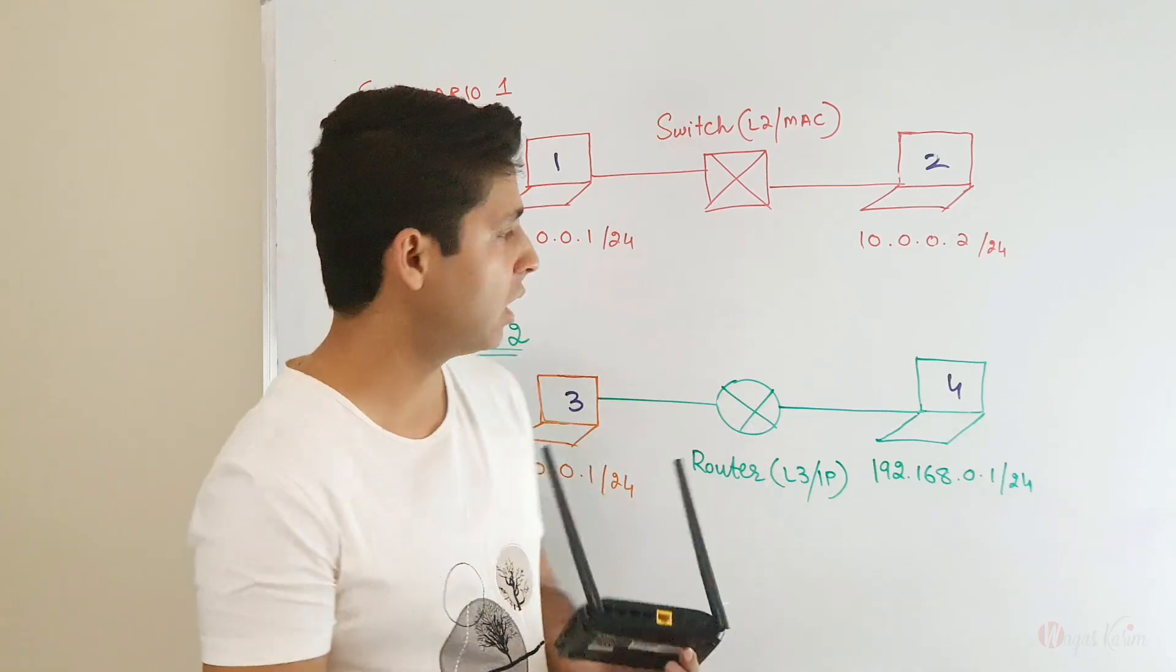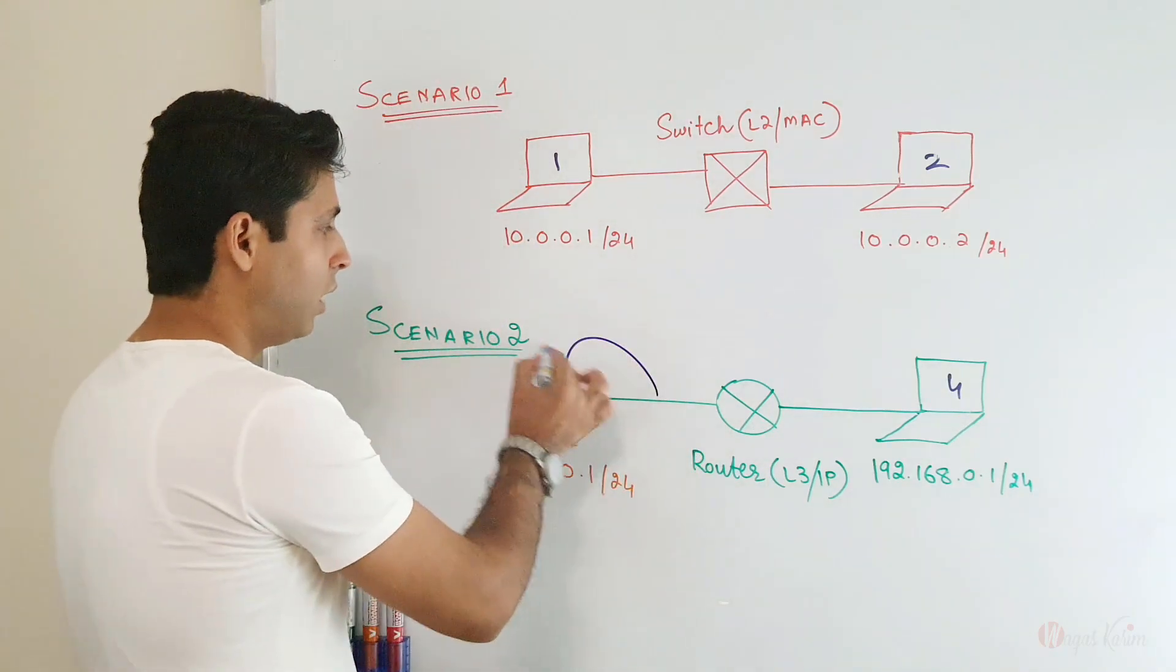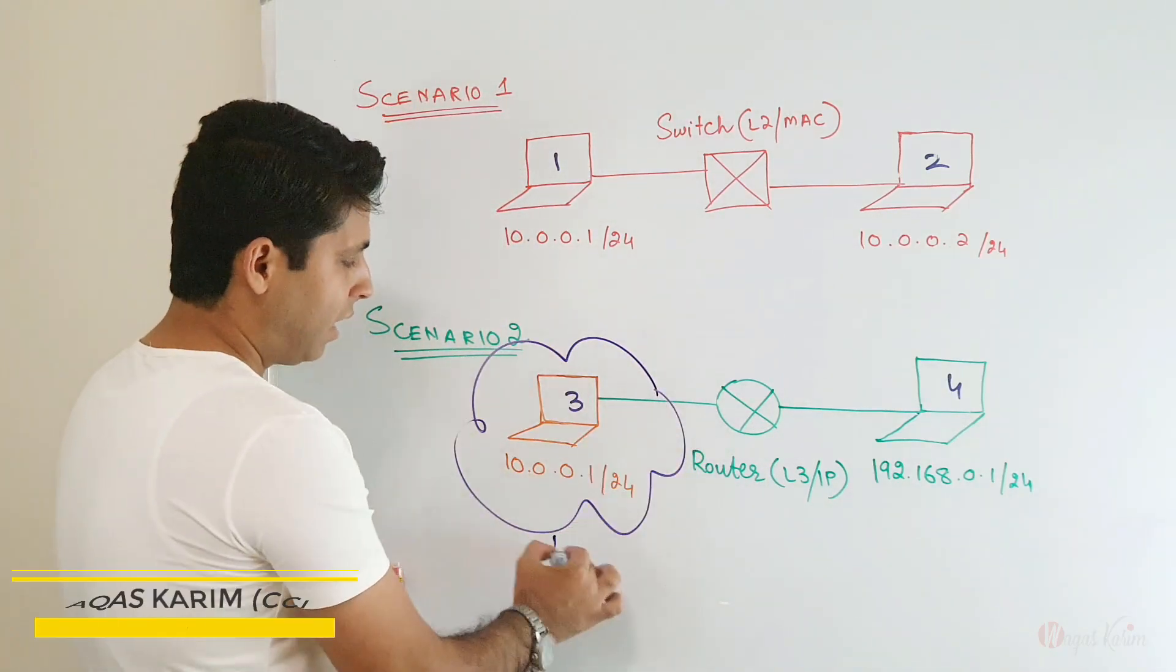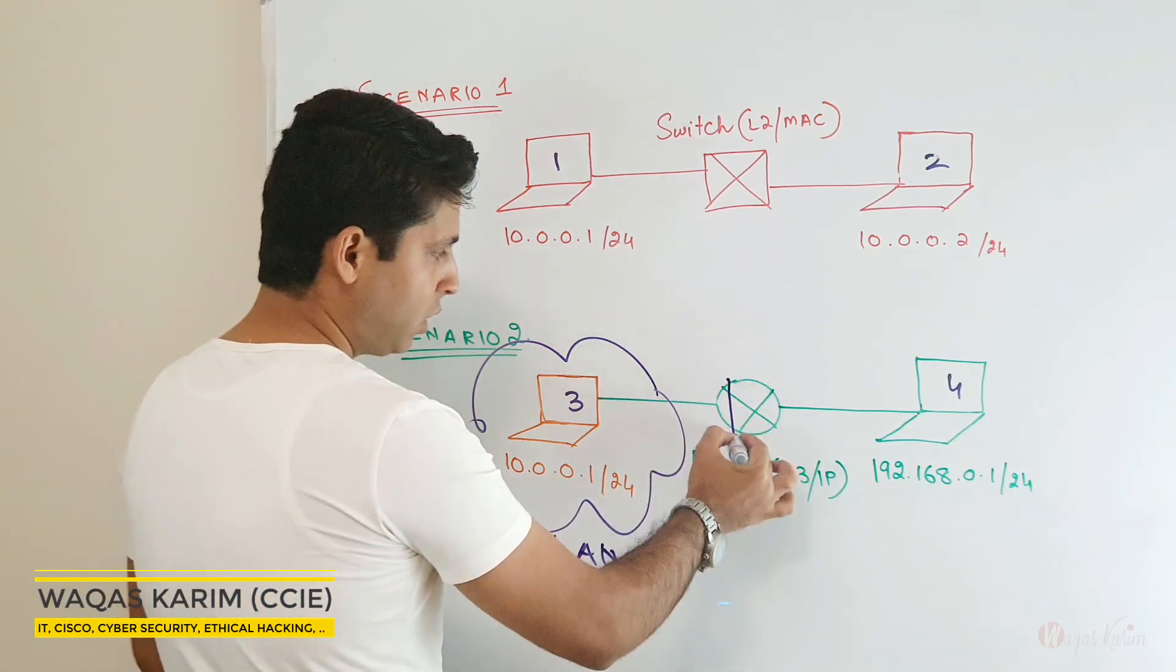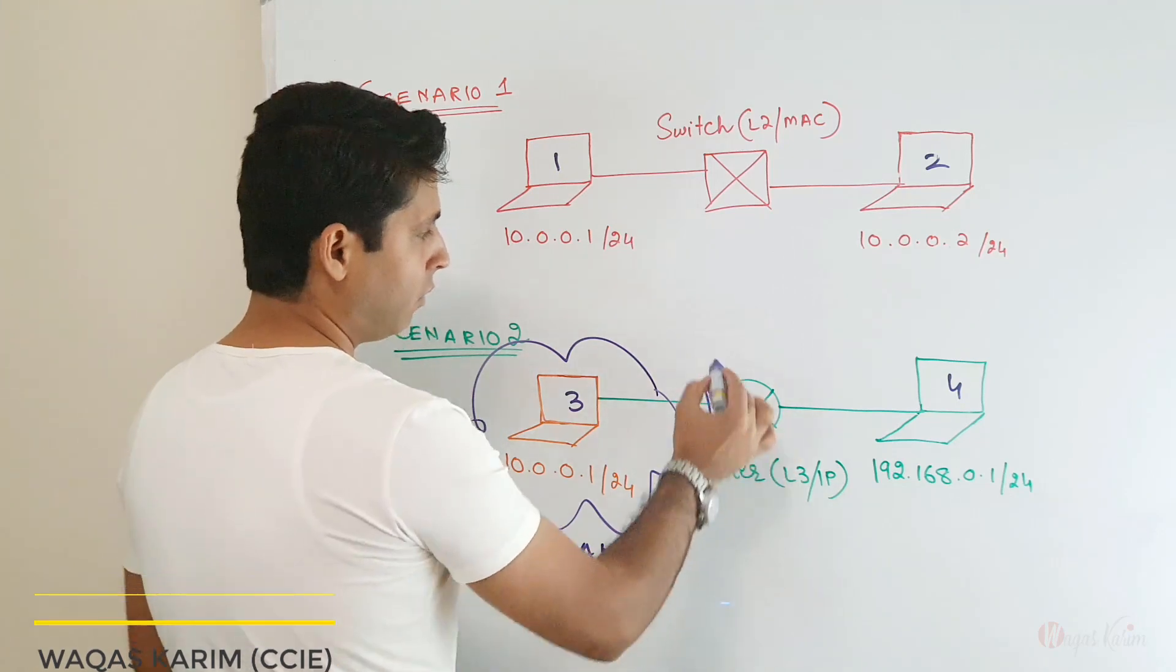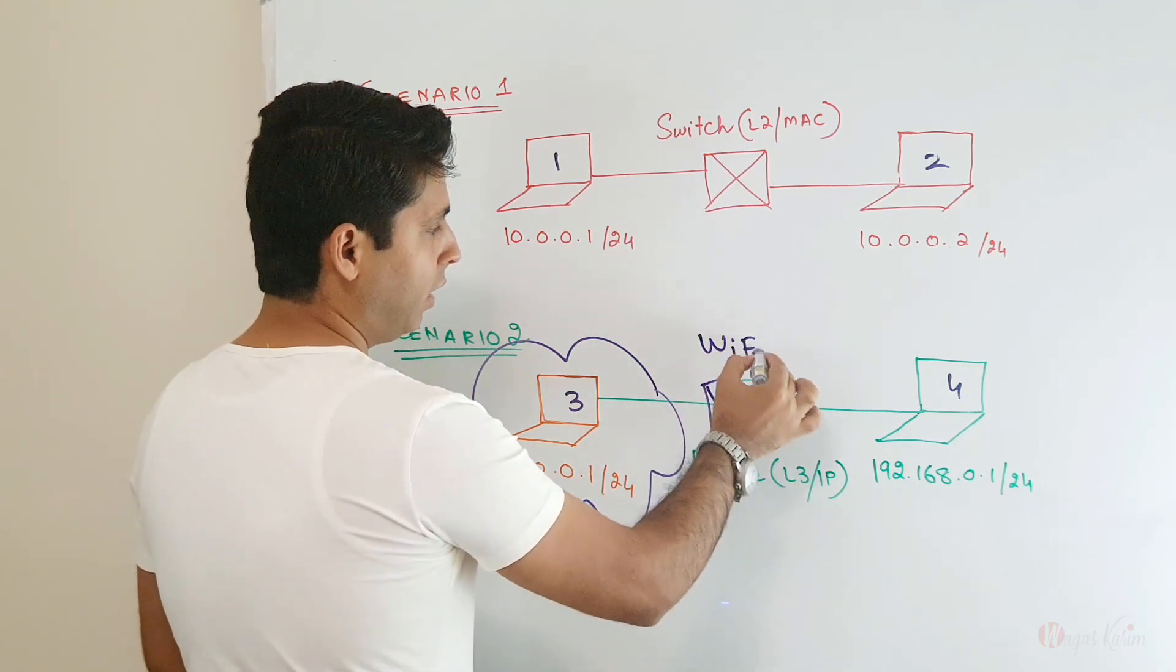This WAN will be going towards your ISP and these LANs will be going towards our local area network. So we have four ports. This is a switch plus a router which is our Wi-Fi device. It also has a Wi-Fi module.